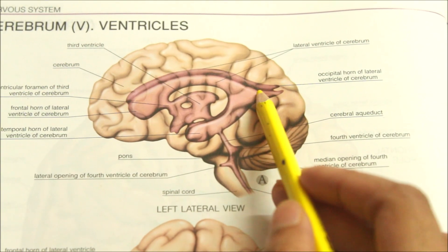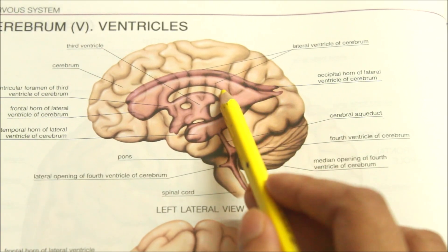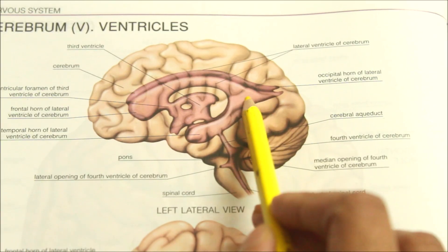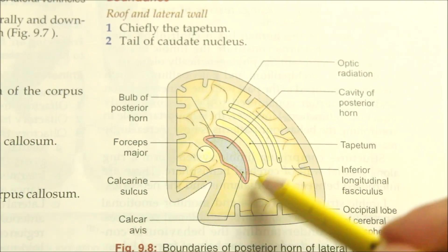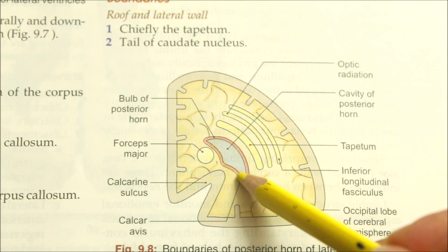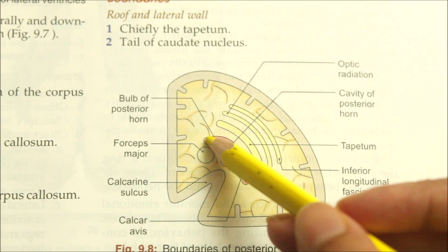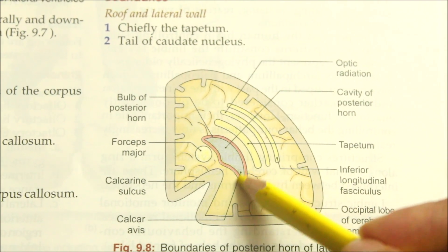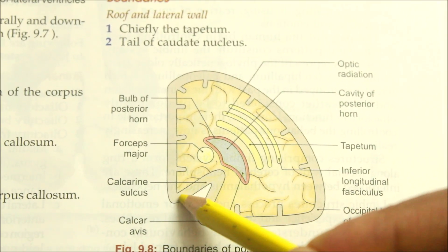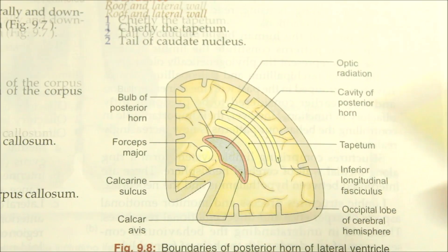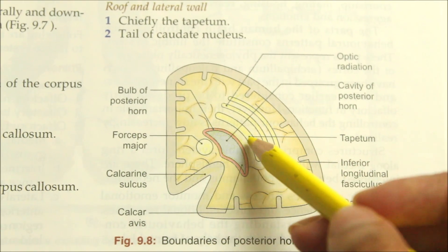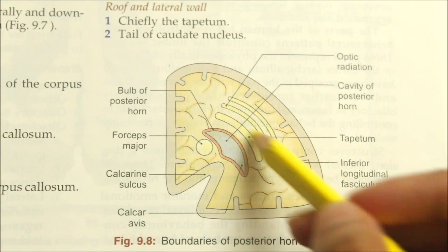Moving on to the posterior horn of the lateral ventricle: it is the part which lies behind the splenium of the corpus callosum and extends into the occipital lobe, directed backwards and medially. Looking at the boundaries: the floor and medial wall are formed by the bulb of the posterior horn, raised by the forceps major, and the calcar avis, raised by the anterior part of the calcarine sulcus. The roof and lateral wall are formed by the tapetum fibers of the optic radiation.